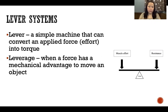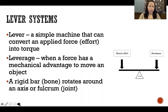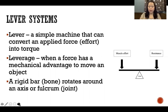Leverage is when a force has a mechanical advantage to move an object. I'm going to talk about mechanical advantage in another video. And a rigid bar — or in the body, that's the bone — rotates around an axis or fulcrum, which in the body is a joint.